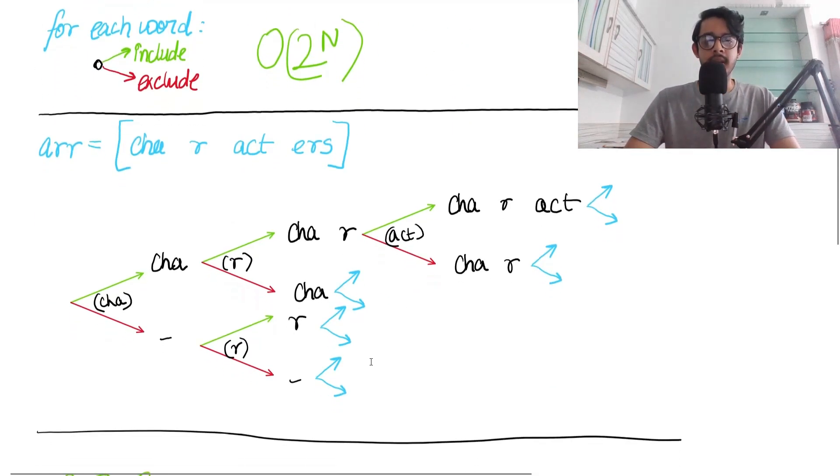Let's look at a visual. We have cha here, looking at the first word and making a decision to include it in the first part and excluding it in the second. Similarly for r, we can append r or skip r. We can generate this for every single possible word, creating this recursive tree-like structure.